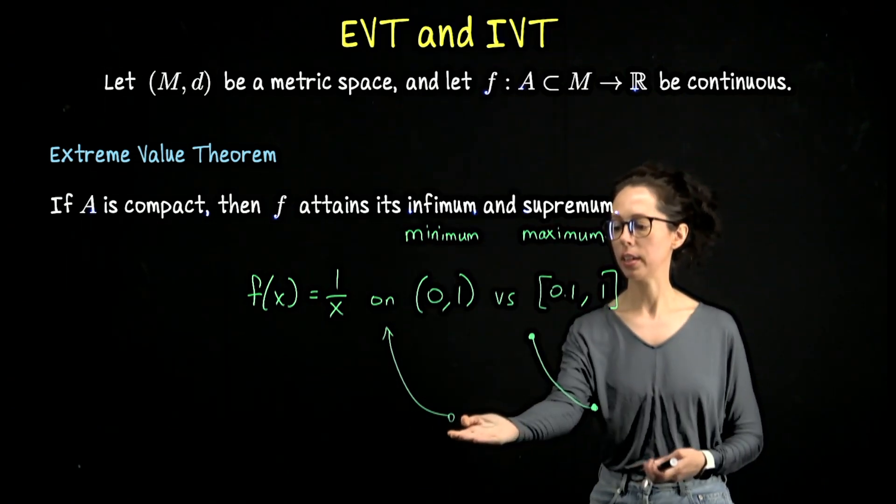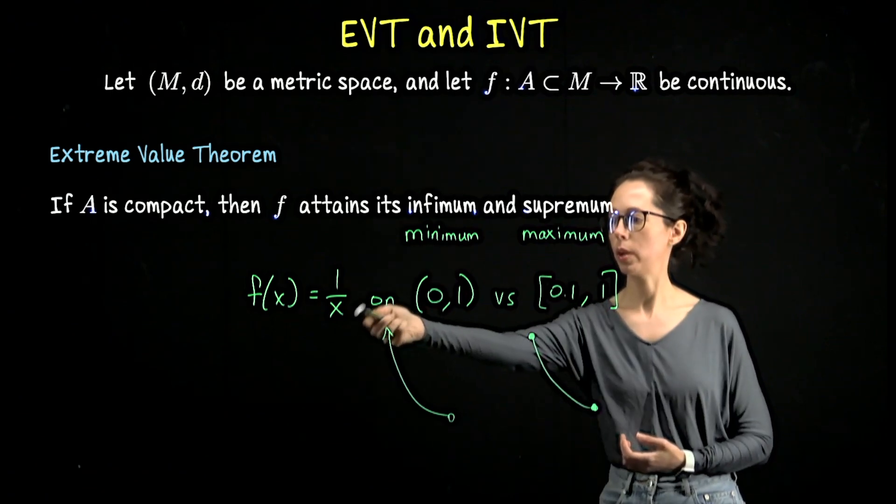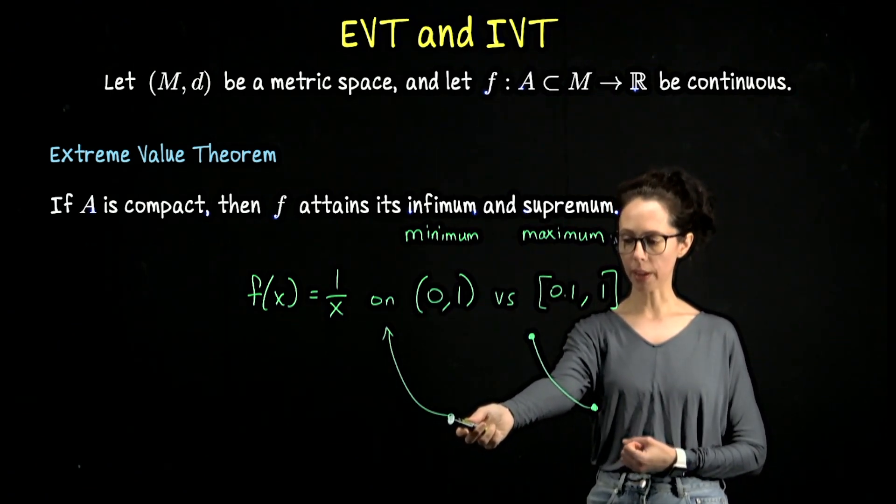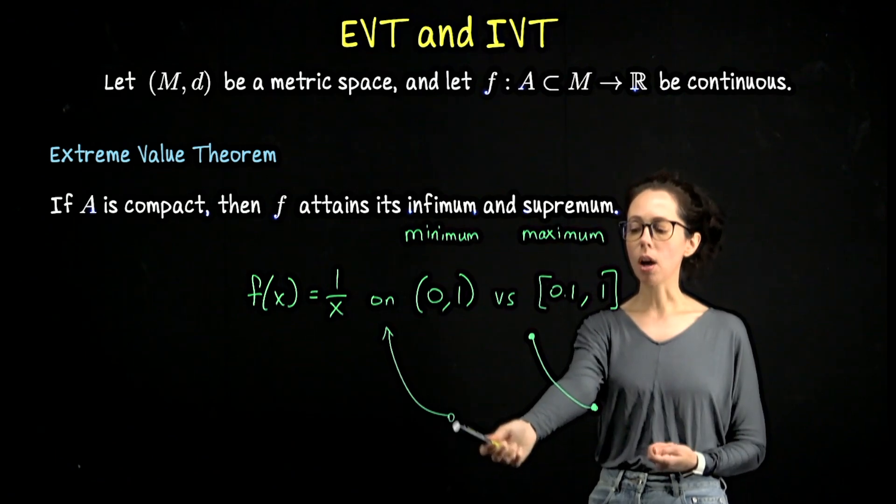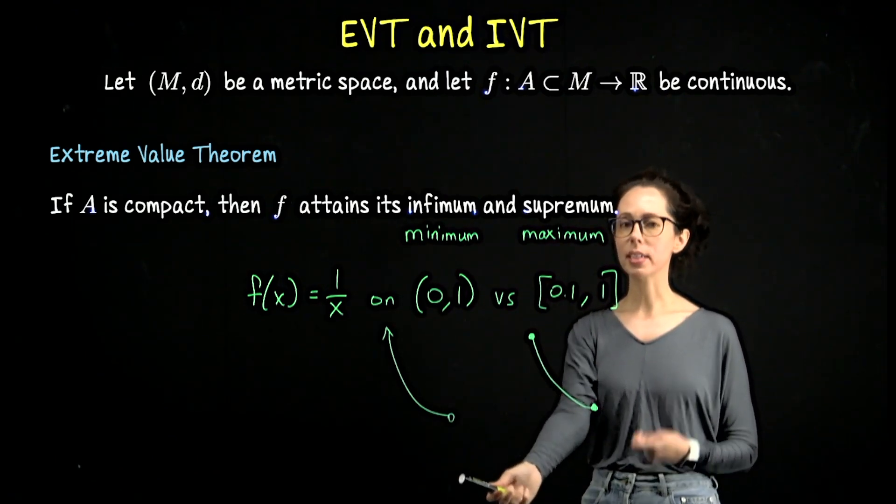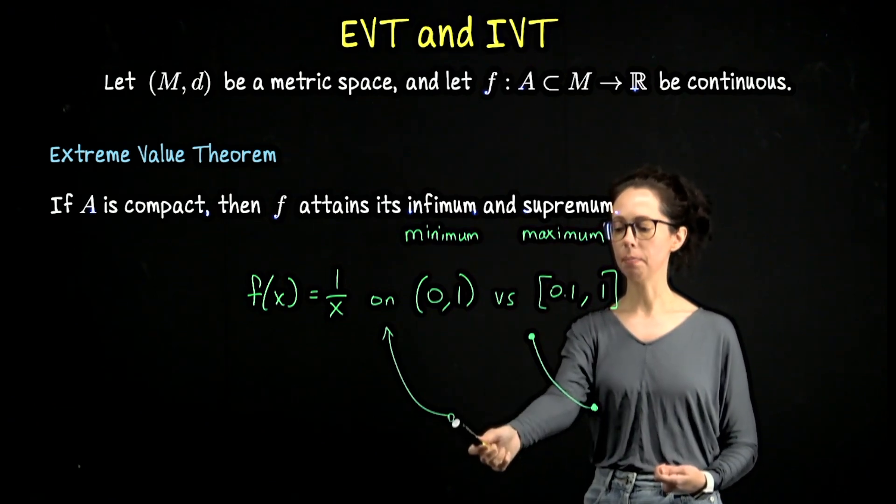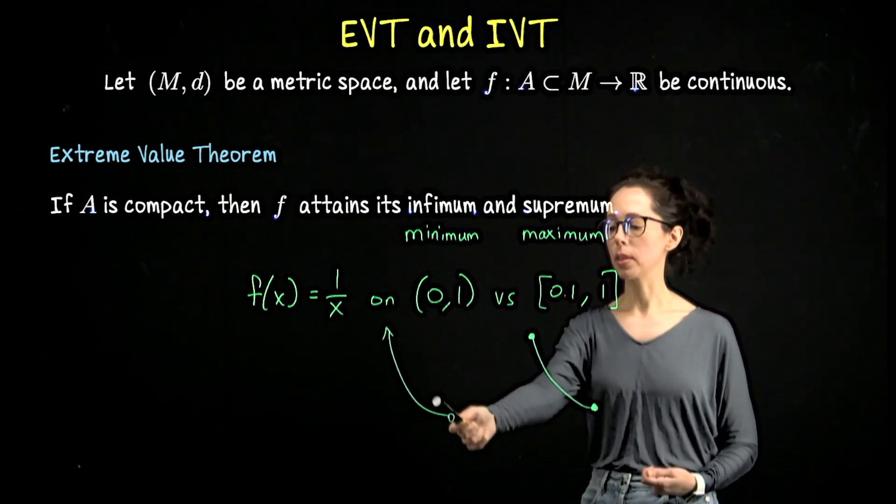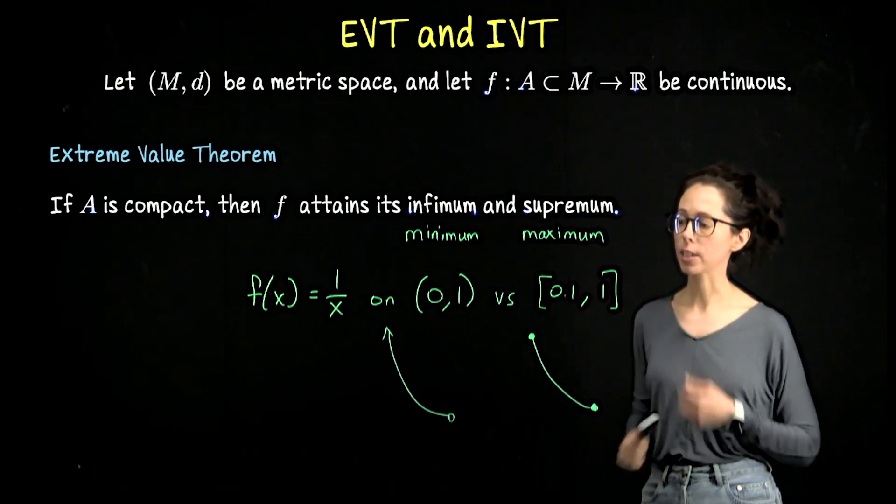In this picture we have an infimum, but we don't attain it. The value down here of 1, f(1) is 1, this potential output value doesn't actually belong to the range. It is an infimum for the set of outputs, but it's not a minimum because it's not part of the set. And then there is no supremum, so this function just grows to infinity as x approaches 0 from the right.